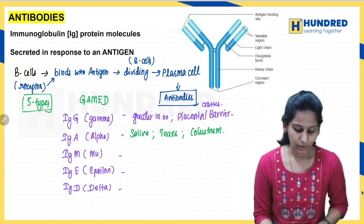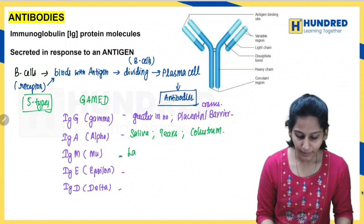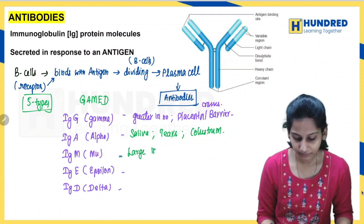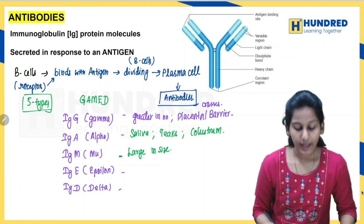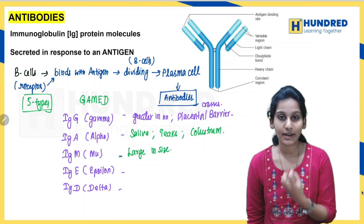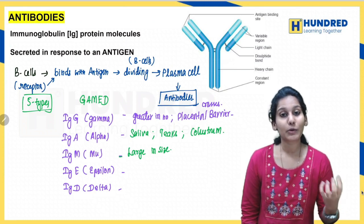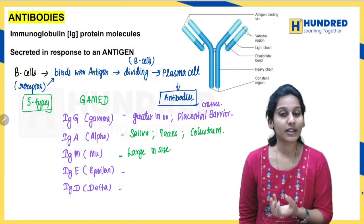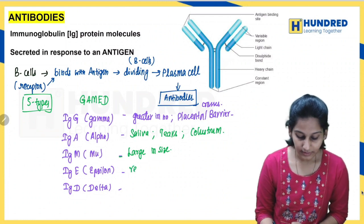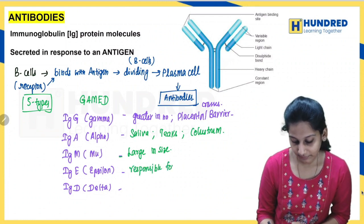Then IgM type — it is larger in size compared to other antibodies. Next, IgE — epsilon. IgE is produced in response to allergies. When we have an allergy, IgE antibodies are produced. So IgE is responsible for allergic responses.